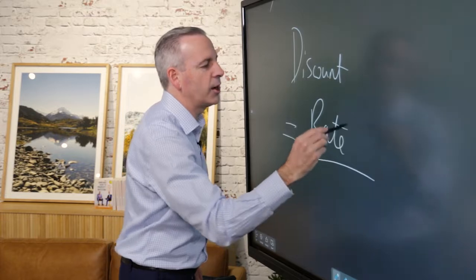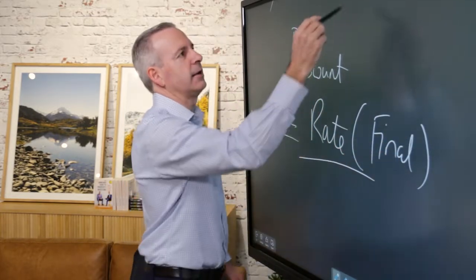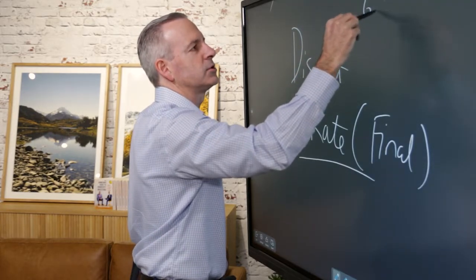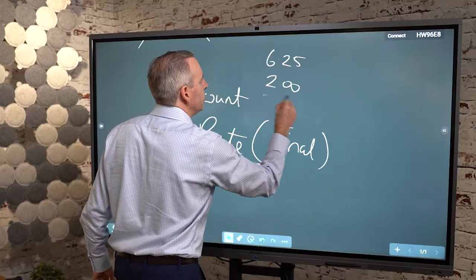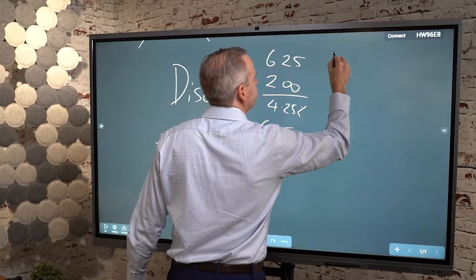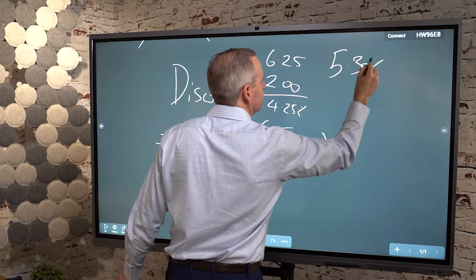And it's that final rate in terms of that calculation when you're releasing that. So off the standard variable, if you've got a standard variable of say 6.25% and you're taking 2% off that, then that brings you down to 4.25% interest rate.